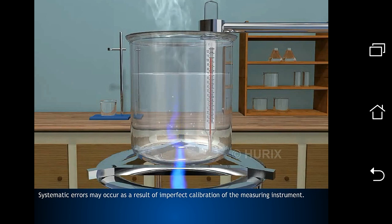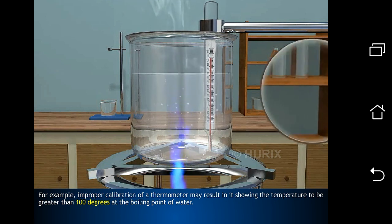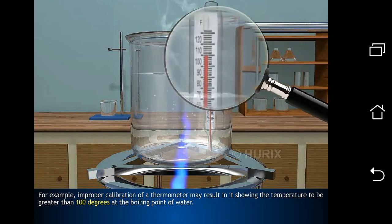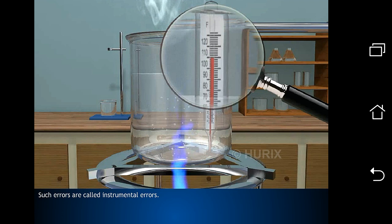Systematic errors may occur as a result of imperfect calibration of the measuring instrument. For example, improper calibration of a thermometer may result in it showing the temperature to be greater than 100 degrees at the boiling point of water. Such errors are called instrumental errors.